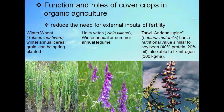We have here three cover crops: winter wheat, which is an annual cereal; hairy vetch; and in this case we're looking at a lupine called tarwi. All of these crops have a differential approach to taking up phosphorus.